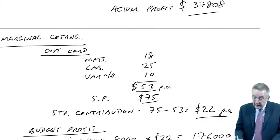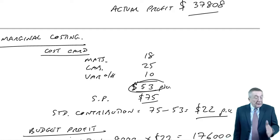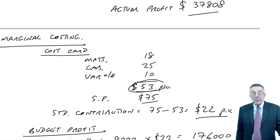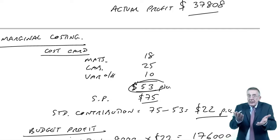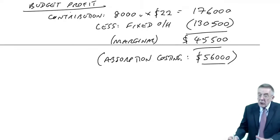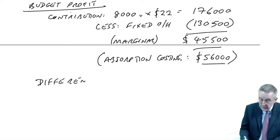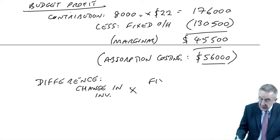With marginal costing, inventories are valued at the marginal cost per unit at $53. With absorption costing, they're valued at the full cost per unit, which if you look back was 68. And of course, if you value your inventories differently, automatically you have different profits. Although it's so unlikely that what I'm about to write would be relevant in F5, I can't carry on without actually saying it. The difference is always the change in inventory times the fixed overheads per unit.